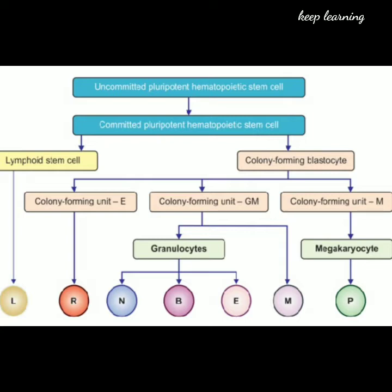These committed stem cells are of two types: lymphoid stem cells and colony forming blastocytes. Lymphoid stem cells give rise to lymphocytes, and colony forming blastocytes give rise to other blood cells. These include colony forming unit E, from which erythrocytes (RBCs) are developed; colony forming unit GM, from which granulocytes — neutrophils, basophils, eosinophils, and monocytes — are produced; and colony forming unit M, which gives megakaryocytes that develop into platelets.